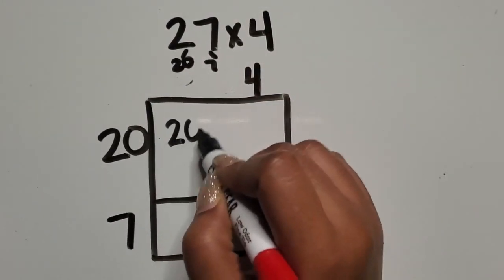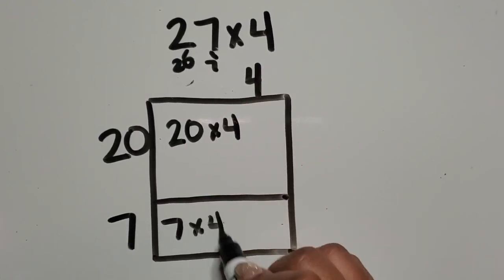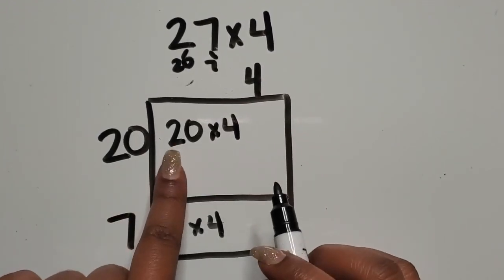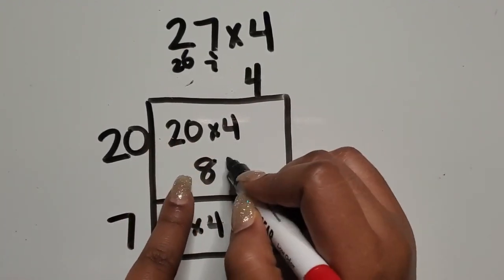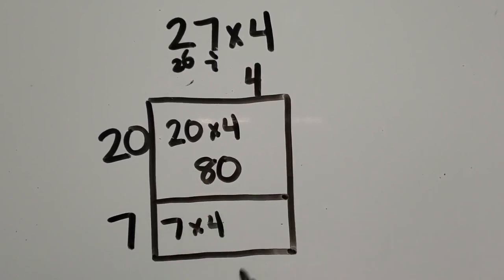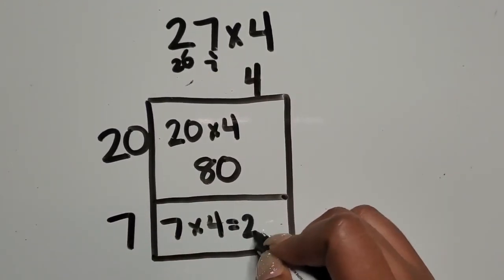So 20 rows of four and seven rows of four. So I know two times four is eight, but 20 is 10 times greater than two. So my product is going to be 10 times greater than eight and seven times four. I know is 28.